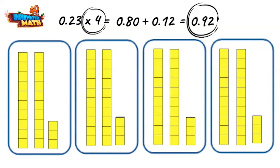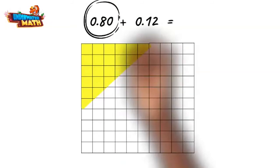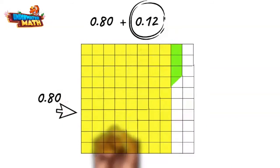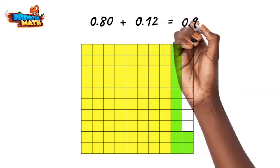We can visualize this addition on a hundredths grid as well: eighty hundredths plus twelve hundredths. If we add up all these little squares, we can see we have a total of ninety-two hundredths shaded. Beautifully done!